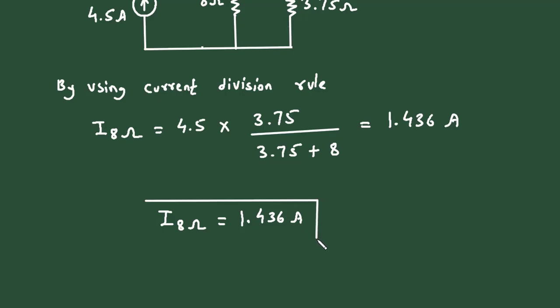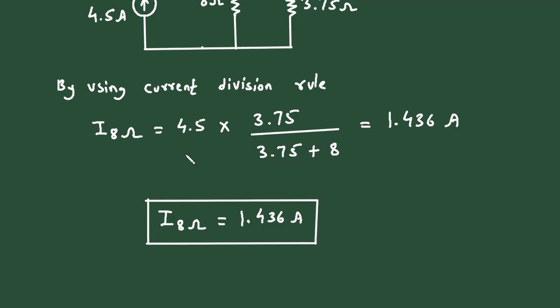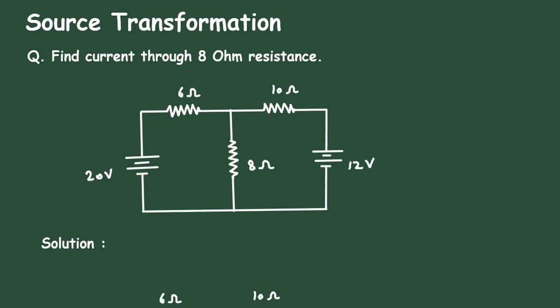This is how we can find the value of current by using the current division rule and source transformation technique. Check the link in the comment section and install the app for free to get the notes of electrical circuits. Thanks for watching.